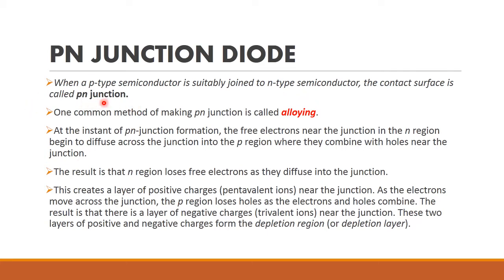There are many methods to create a P-N junction. One of the common methods used is called alloying. In P-type semiconductor, the majority charge carriers are holes, and in N-type semiconductor, the majority charge carriers are electrons.